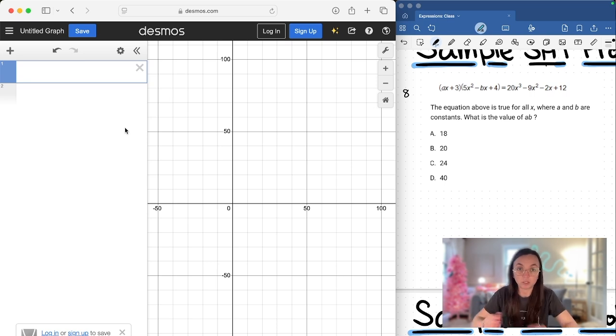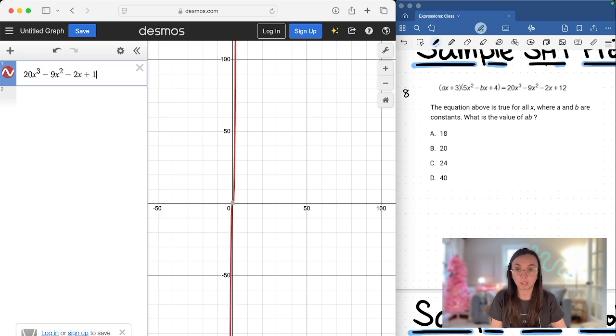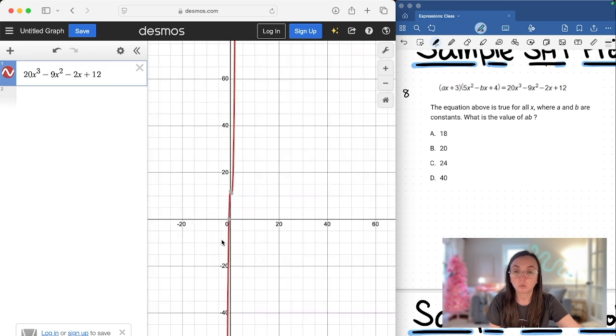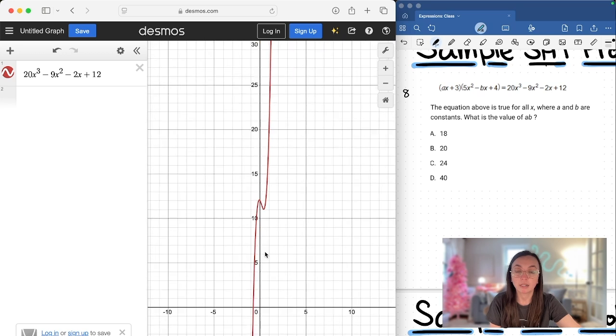All right, so what you want to do is put one side of the equation on the first line here. So let's just do the 20x³ - x + 12. Okay, and that's gonna give you—let me make sure I wrote this all down right. Now, okay, we're gonna scroll in. So this is what that shape is going to look like.